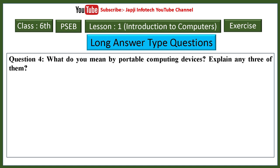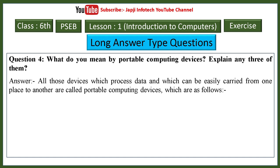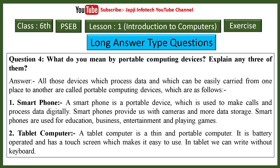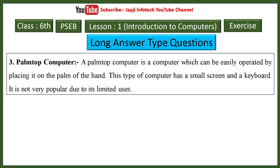Fourth question: what do you mean by portable computing devices? Explain any three. All devices which process data and can be easily carried from one place to another are called portable computing devices. First is smartphone — a portable device used to make calls and process data digitally, with cameras and data storage, used for education, business, entertainment. Second is tablet computer — thin, portable, battery-operated with a touchscreen. Third is palm-top computer — operated by placing it on the palm, with a small screen and keyboard, not very popular due to limited uses.